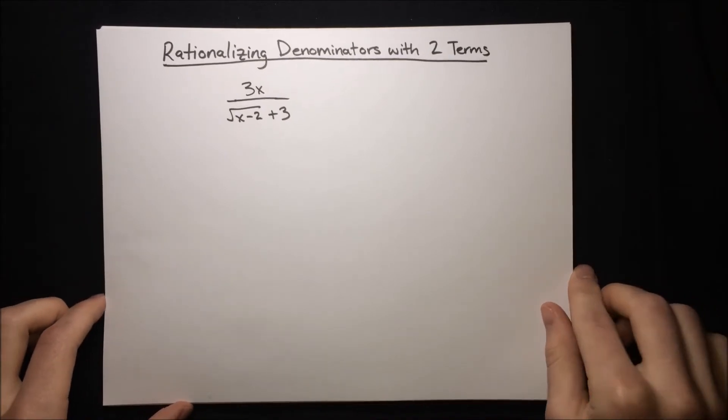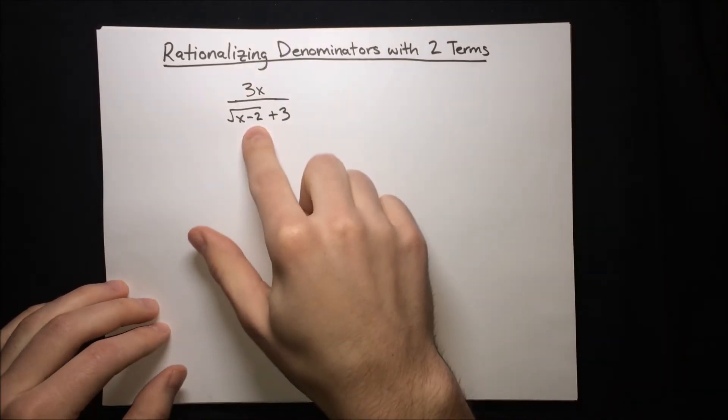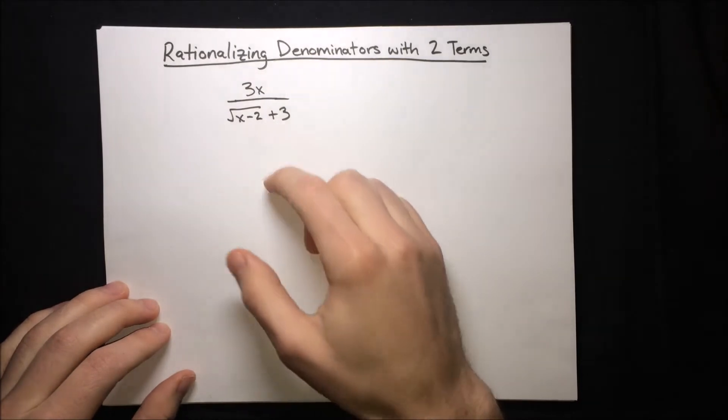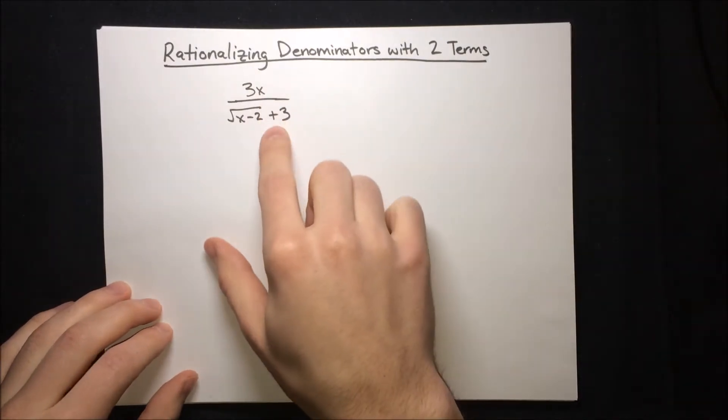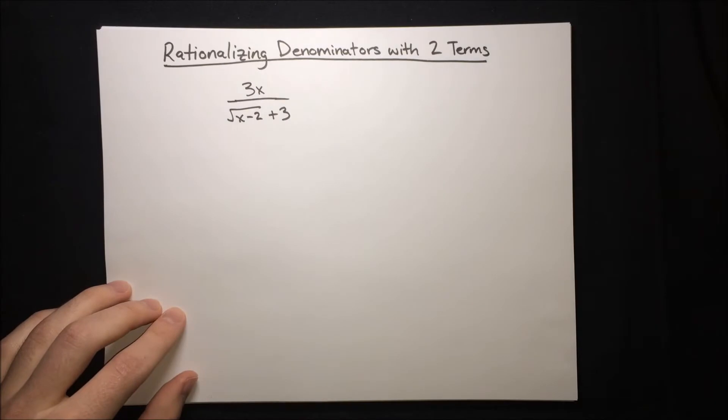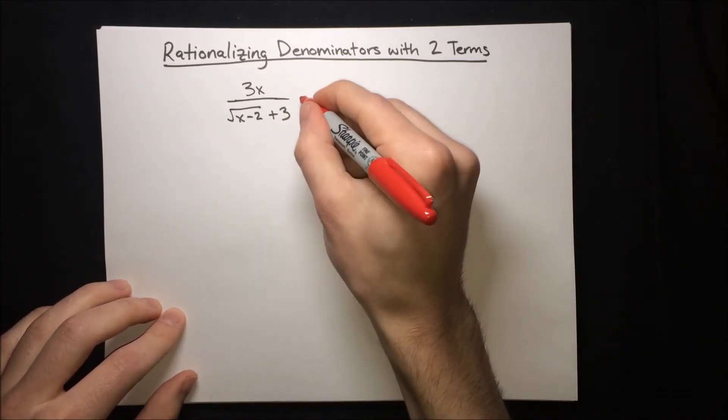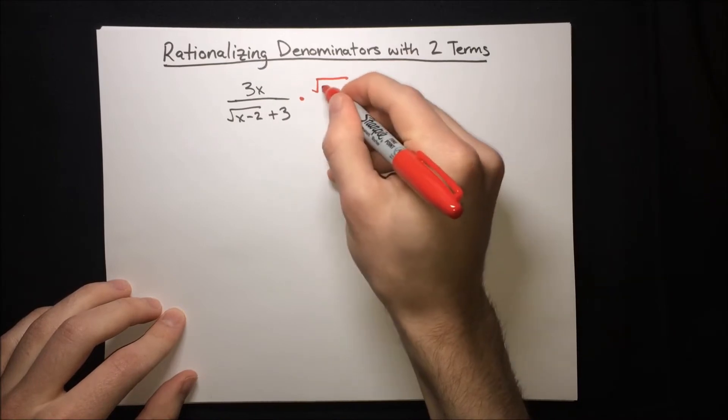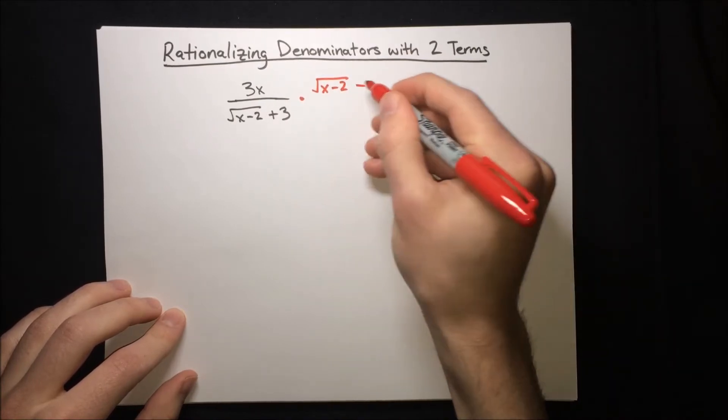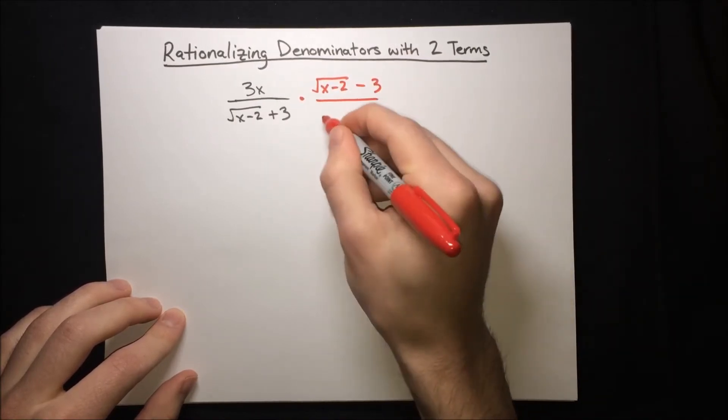Here's a more complicated fraction, but the process is still the same. We're just going to multiply the numerator and denominator by the conjugate of the denominator. The conjugate is just going to flip that sign from a plus to a minus, so we'll be multiplying by root x minus 2 minus 3 on the top and the bottom.